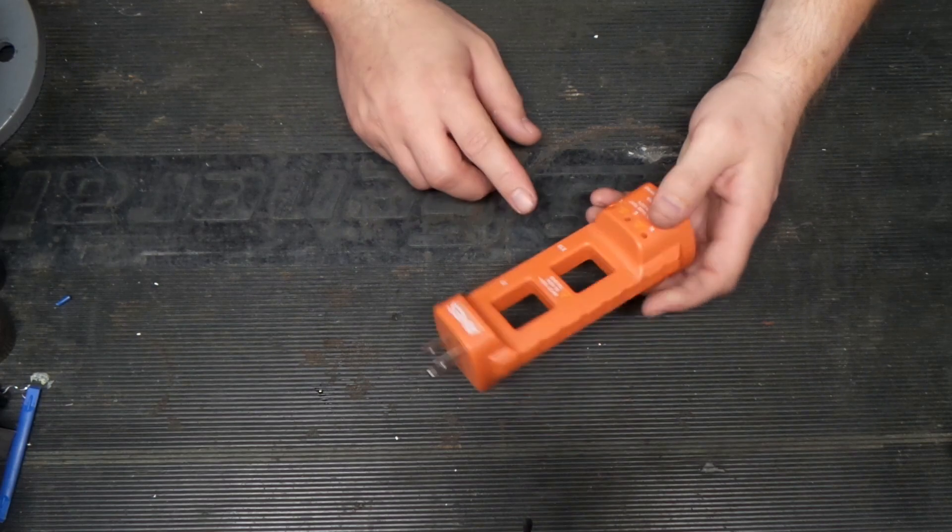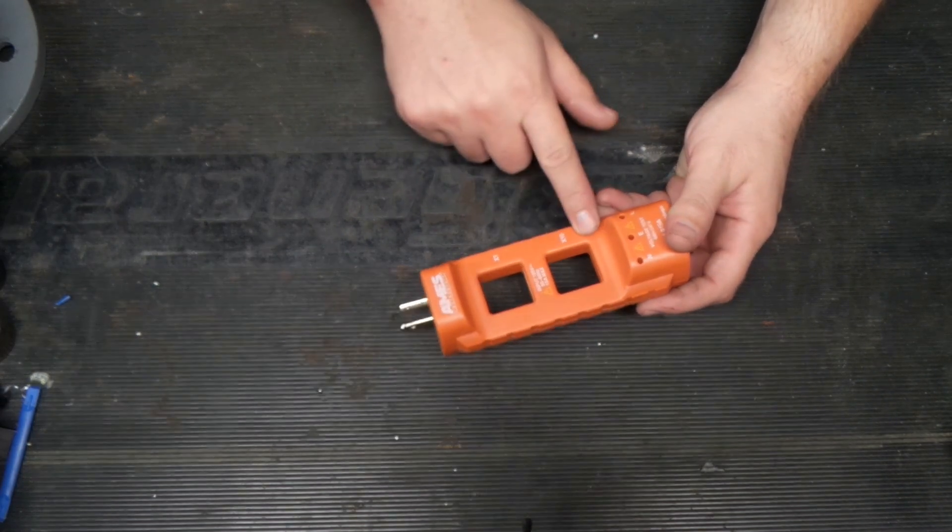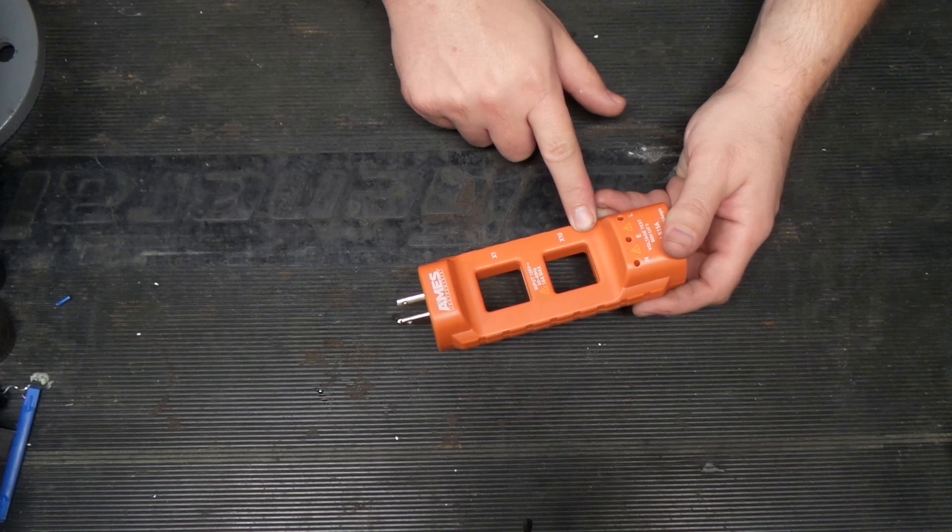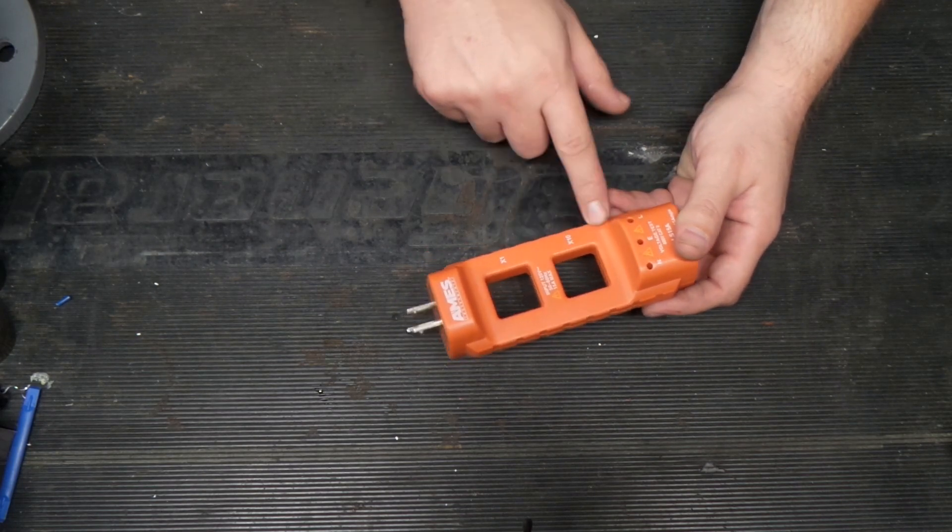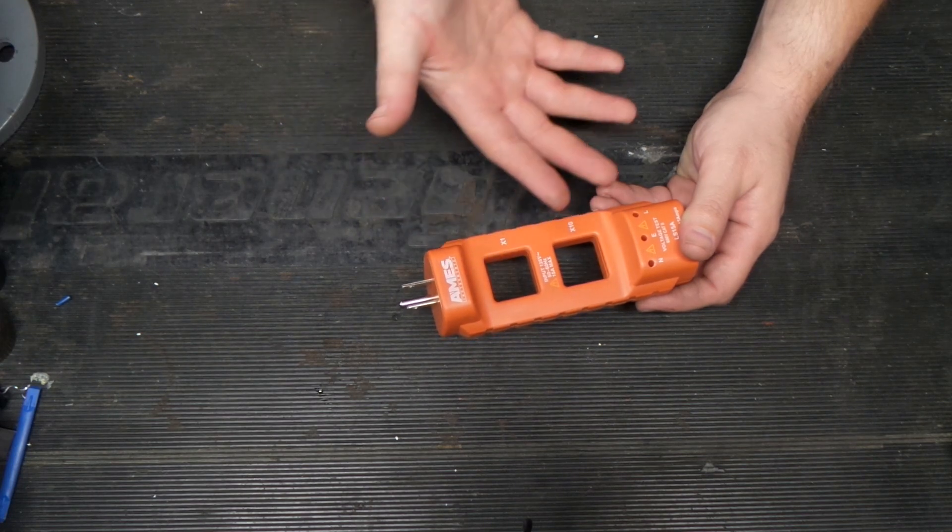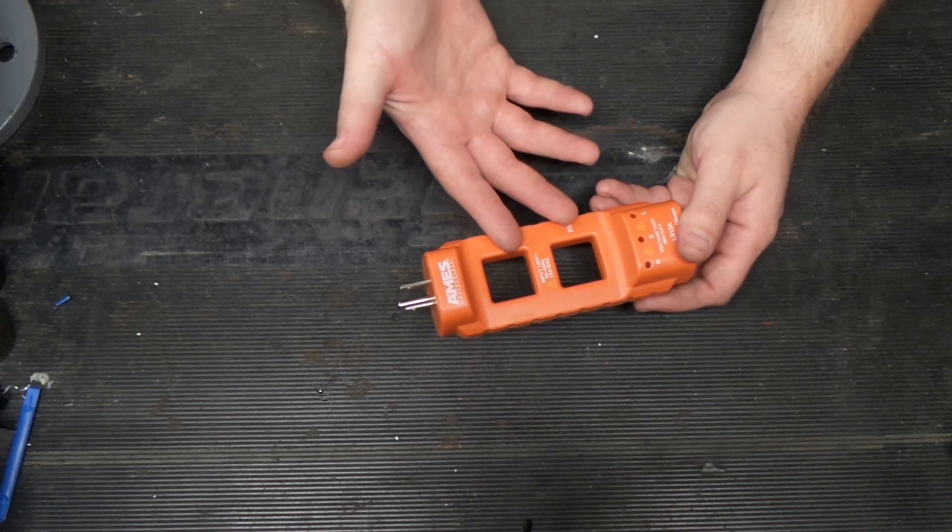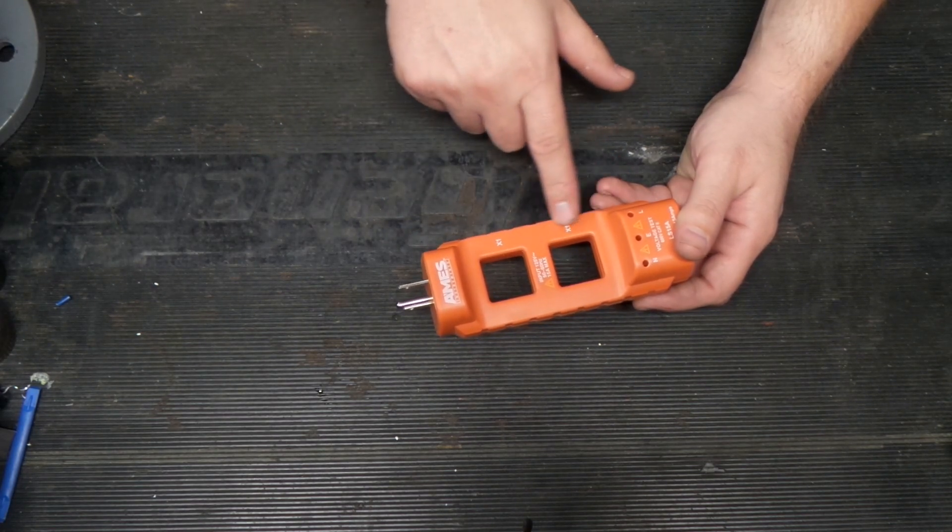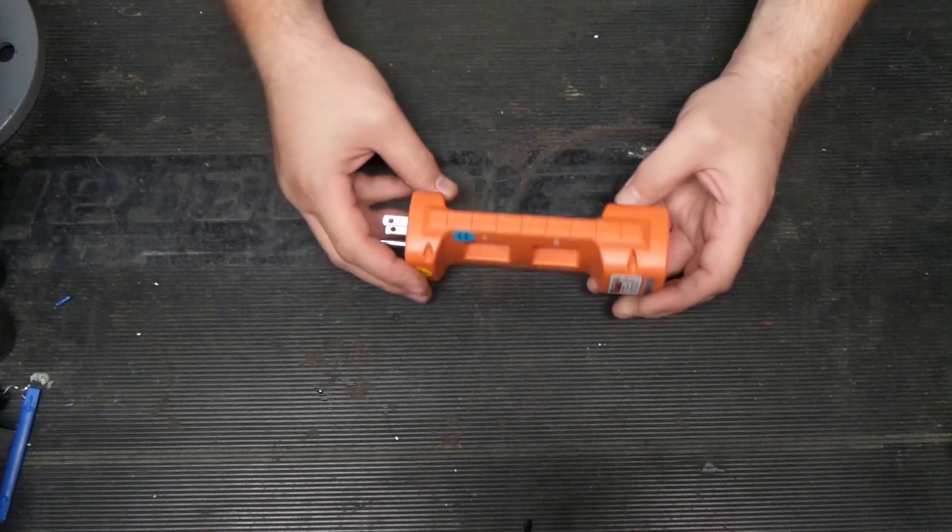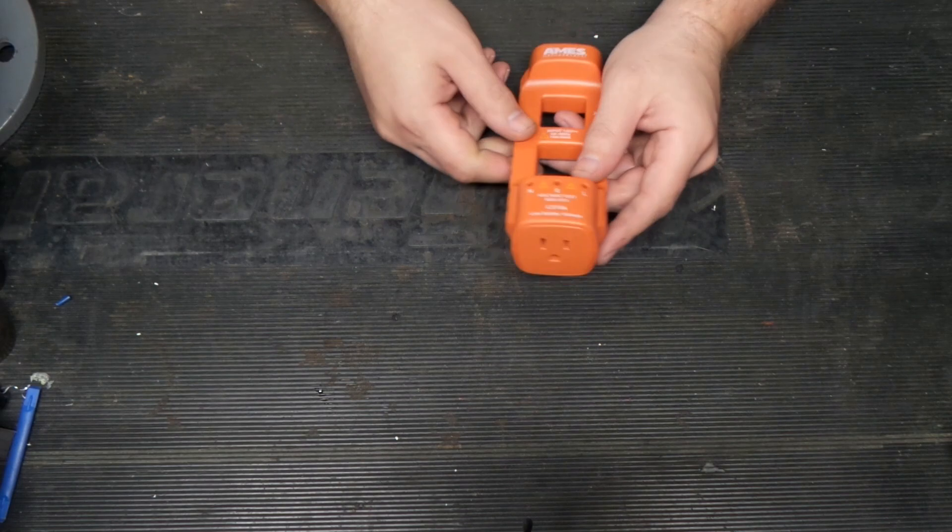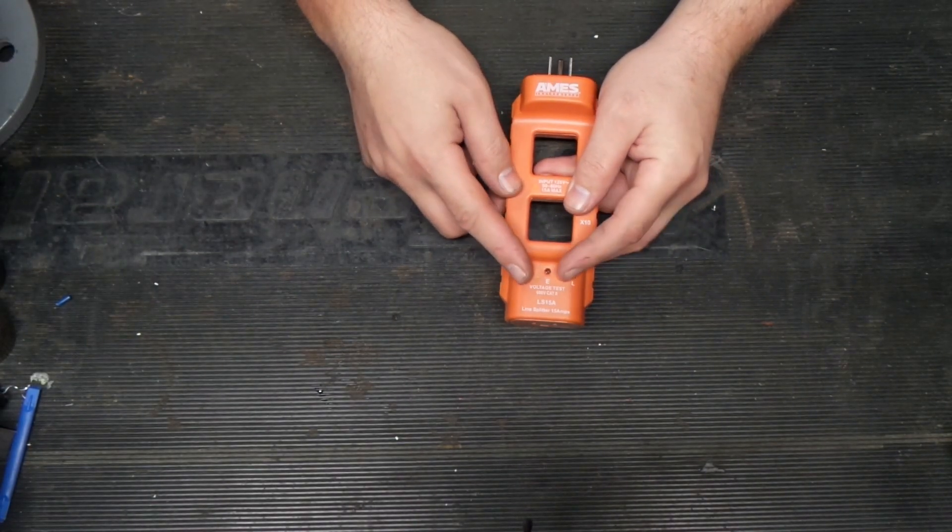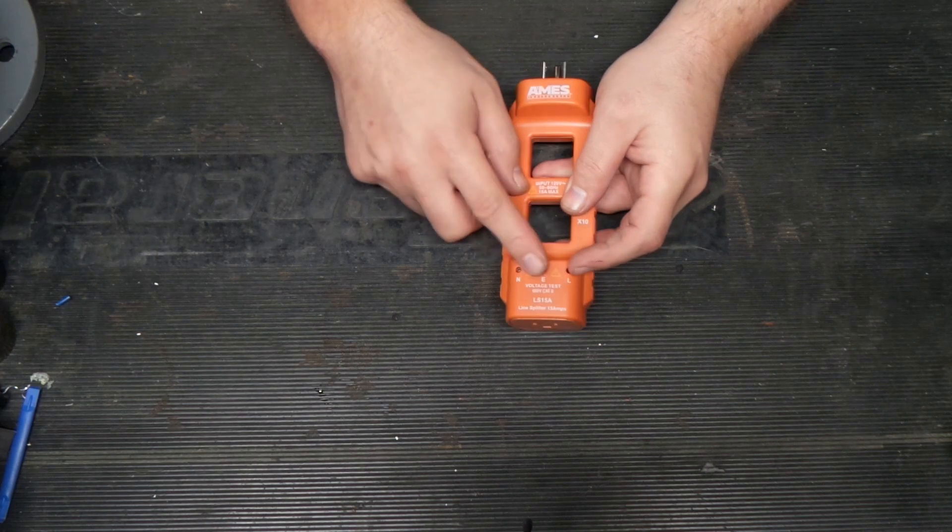Now one thing is that here is a times 10 multiplier and that's really useful for things that read lower current. So say if it's a quarter amp or something like that, it would actually read 2.5 amps because you'd be multiplying it by 10. Now this also has a nice feature where you can also read voltage with it.